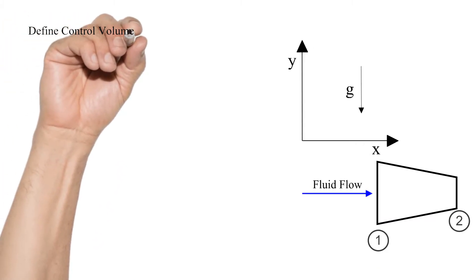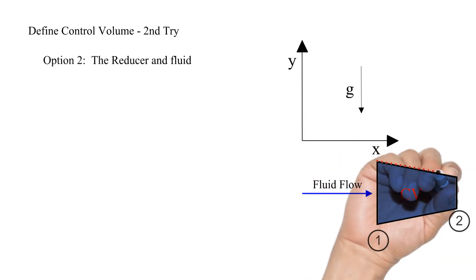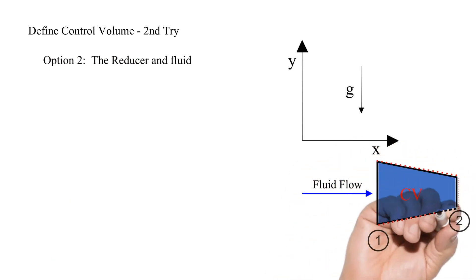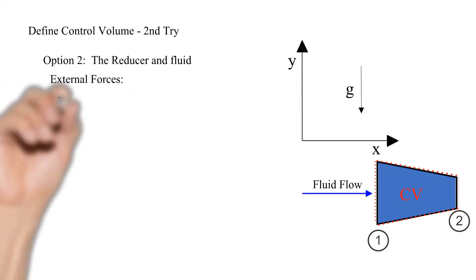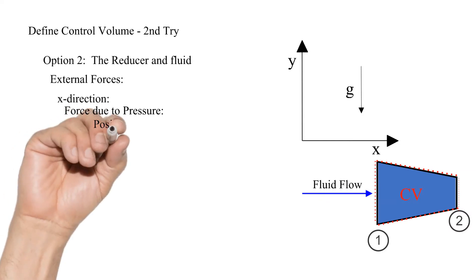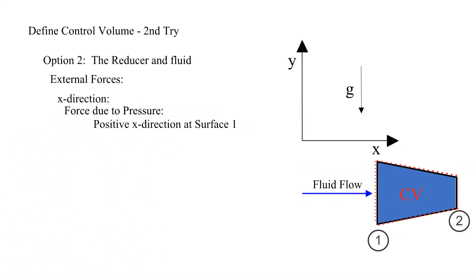Let's try again. Option two is to define the reducer and the fluid as the control volume. Once again, we need to consider all of the external forces on our control volume. For now let's start with the x direction. Let's start with forces due to pressure acting on the control surface. We have a pressure force acting in the positive x direction at surface 1. We have a pressure force acting in the negative x direction at surface 2. The force on the fluid due to its interaction with the wall of the reducer is now an internal force and does not need to be calculated.